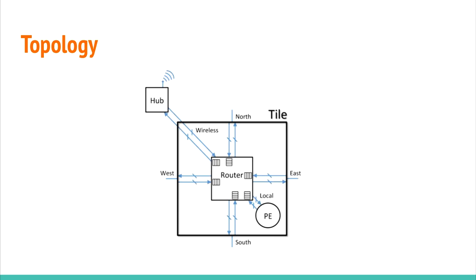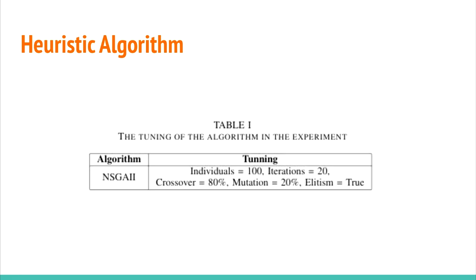This figure shows the wireless router architecture. Each router has five ports, where one is the local port. The router has an antenna to exchange information with the other hubs. The communication with the normal routers happens through the other traffic ports.